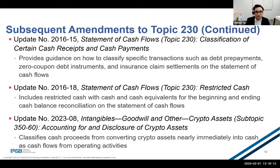ASU 2016-18 addresses the diversity in classification and presentation related to restricted cash on the cash flow statement. This update requires that the statement of cash flows explain changes in restricted cash and cash equivalents, which should be included in the cash and cash equivalents when reconciling the beginning and end of period totals shown on the statement of cash flows. Finally, ASU 2023-08 deals with crypto assets received as non-cash consideration in the ordinary course of business and converted nearly immediately to cash — those cash proceeds should be classified as operating activities. Similarly, when crypto assets are received by a not-for-profit entity without donor-imposed limitations and converted nearly immediately to cash, those proceeds are operating; if donated with donor-imposed limitations for long-term purposes, they are classified as financing activities.